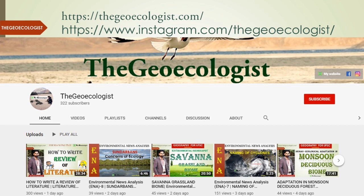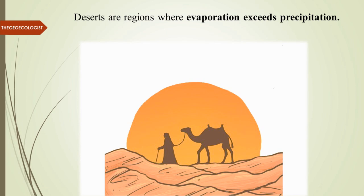Deserts are the regions where evaporation exceeds precipitation. The basic definition of a desert is an area where the rate of evaporation supersedes the rate of precipitation — meaning precipitation is lesser and evaporation is more.